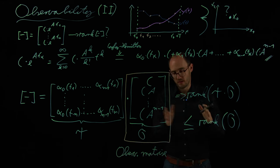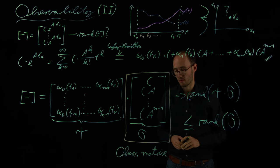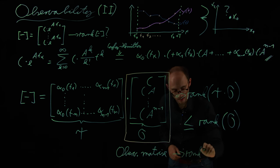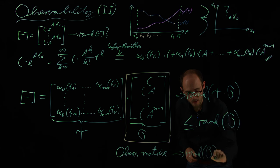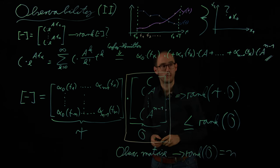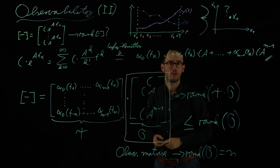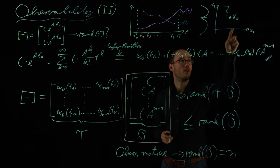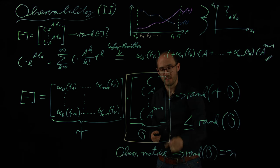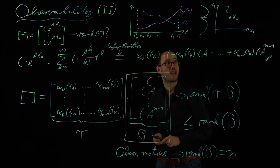One can actually show, we could basically go forward with this proof, we could actually show that if the observability matrix, if the rank of this matrix is full, so if rank of this O matrix is N, then our system is fully observable. So this would basically be the answer to this question under which conditions we are able to find the initial state just by observations of inputs and outputs, and the answer is, if this matrix has full rank, then we are able to do so.